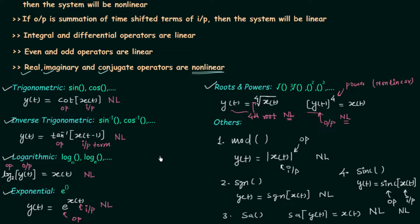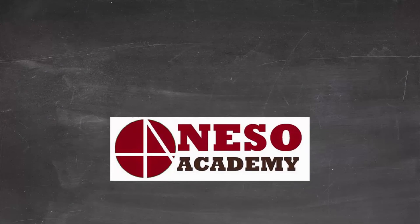If you want to verify the nonlinearity of any of these operators, you can check by testing the law of additivity and the law of homogeneity. Either one of these laws will be violated, confirming the system is nonlinear due to the operator being used. That is why we call these nonlinear operators. In the next presentation we will talk about shift systems.